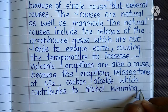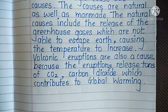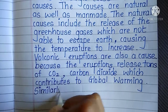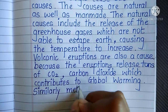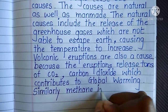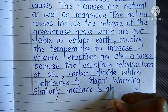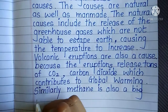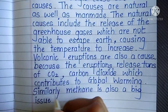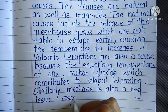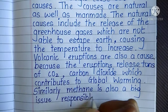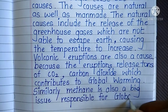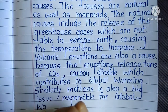The causes are natural as well as man-made. The natural causes include the release of greenhouse gases, which are not able to escape the earth, causing the temperature to increase. Volcanic eruptions are also a cause because the eruptions release tons of carbon dioxide, i.e. CO2, which contributes to global warming. Similarly, methane is also a big issue responsible for global warming.